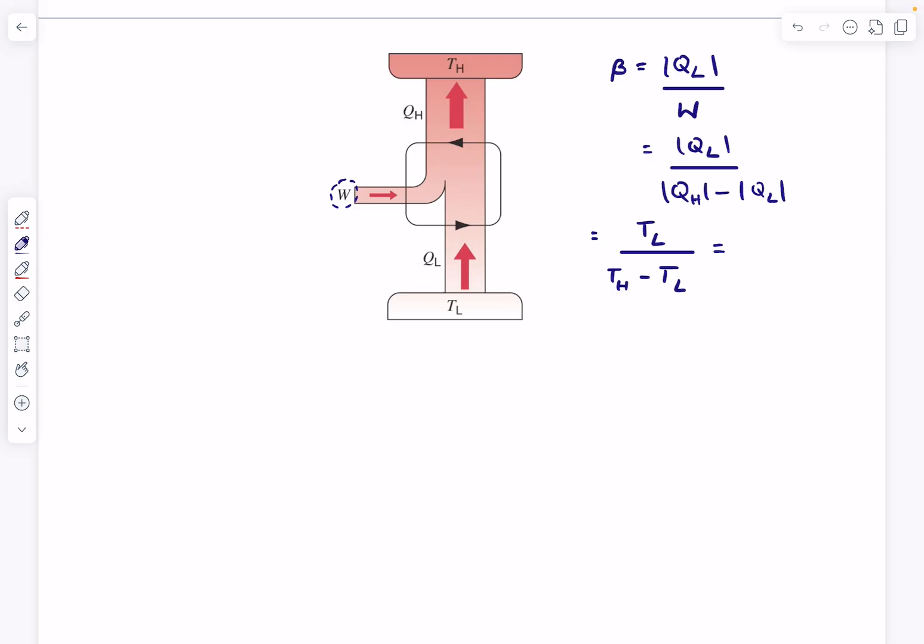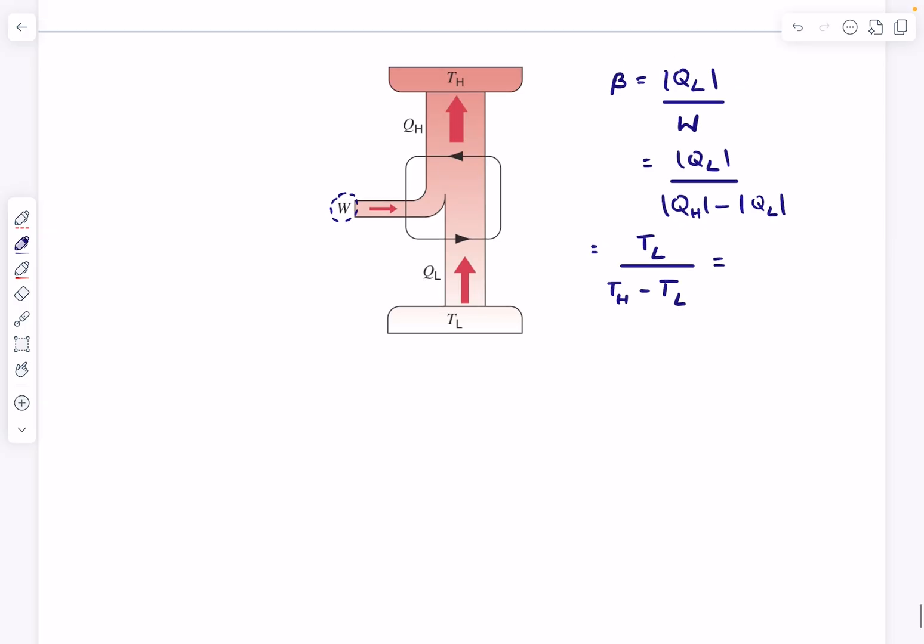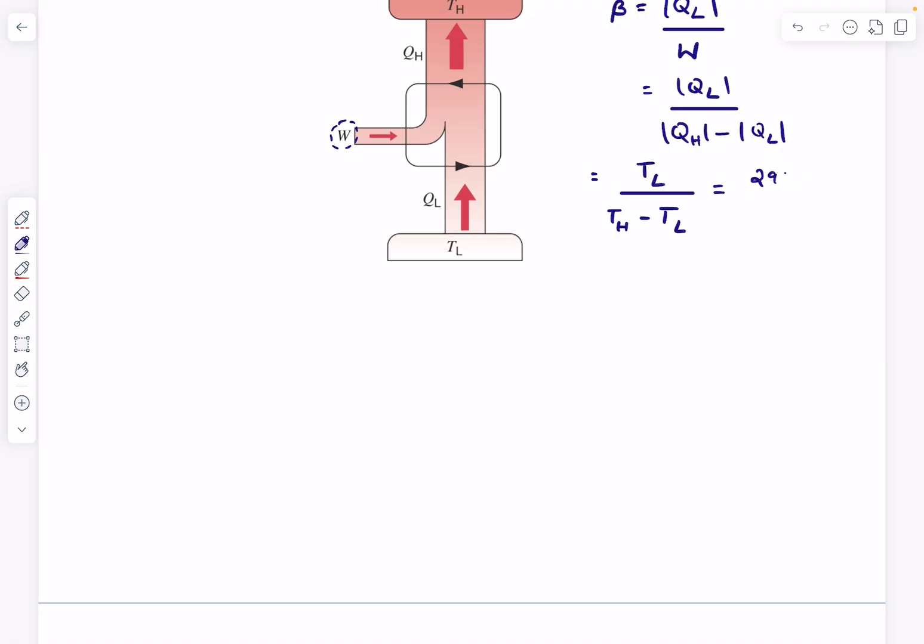Here the low temperature reservoir is our room that we need to keep cool. That was at 21 degrees Celsius, 294 Kelvin, and the surrounding temperature was 42 degrees Celsius. TL is 21, so 42 minus 21 will be 21. And this turns out to be 14.